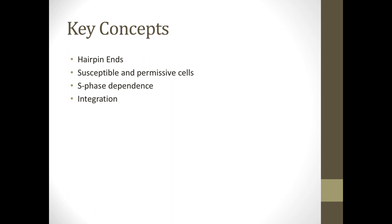To summarize parvoviruses: the important things are the hairpin ends and how these viruses overcome the problem of replicating DNA ends. We talked about susceptible versus permissive cells — susceptible means the virus can enter, permissive means it can replicate — and for these viruses the critical step is uncoating at the nucleus. Because these viruses don't encode their own polymerases, they are dependent on cellular polymerases present only during the S phase. And integration can potentially happen if a dependovirus doesn't have a helper virus co-infecting the same cell.